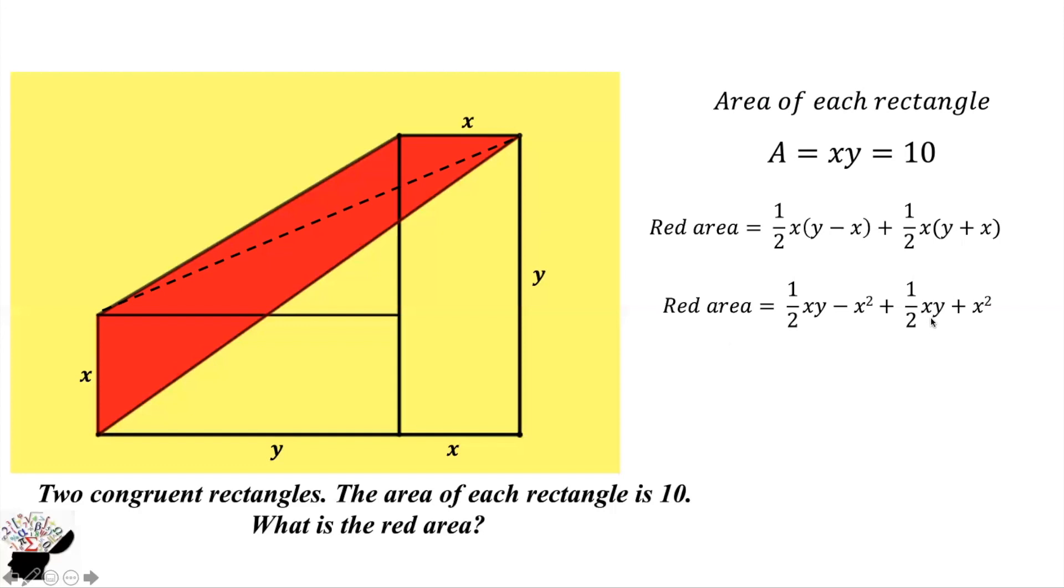plus half xy plus x squared. This x squared and this x squared will cancel. We are going to get half xy plus half xy, which is equal to xy.